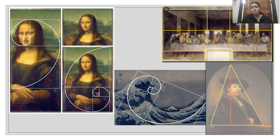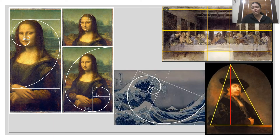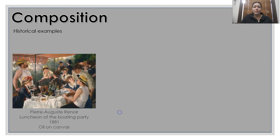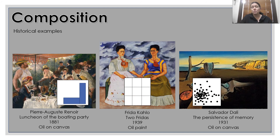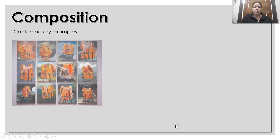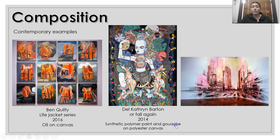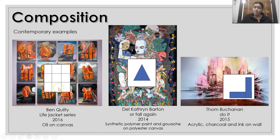If you Google any of the compositions by famous masters, you can find the types of composition styles and structures that they are. The composition examples — completely based on personal preference because I find these aesthetically pleasing — I've gone with Renoir, Carlo and Dali, and I've also put the types of composition that I think they could be. This doesn't mean they are 100% these compositional structures — it's just my interpretation. You could argue that the Dali work is also showing an L structure. Some contemporary examples: the Quilty, the Del Catherine Barton and the Tom Buchanan — again, types of structures is a personal interpretation.